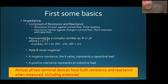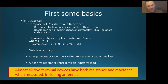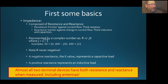Diving right into some basics — impedance. Impedance is composed of both a resistance and a reactance. You can think of resistance as the friction against the current flow — your basic form is a resistor. Reactance is the inertia against the change in current flow; think about an inductor or a capacitor — they want to oppose any change in current flow. The way you represent an impedance is with a complex number: R plus or minus JX, where R is the resistance part and X represents the reactance value.